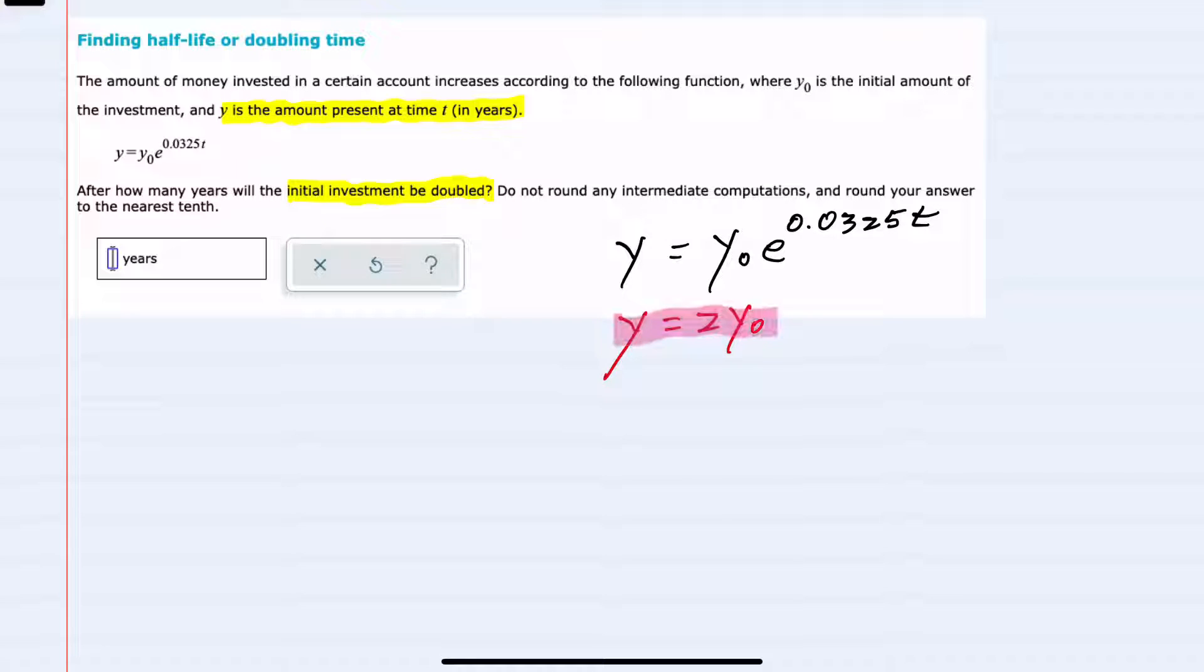This allows us to substitute in for y in the original equation. Replacing y with 2y₀ on the left-hand side, we can now see that both sides have that common y₀ that we can divide out to completely remove y₀ from our equation.